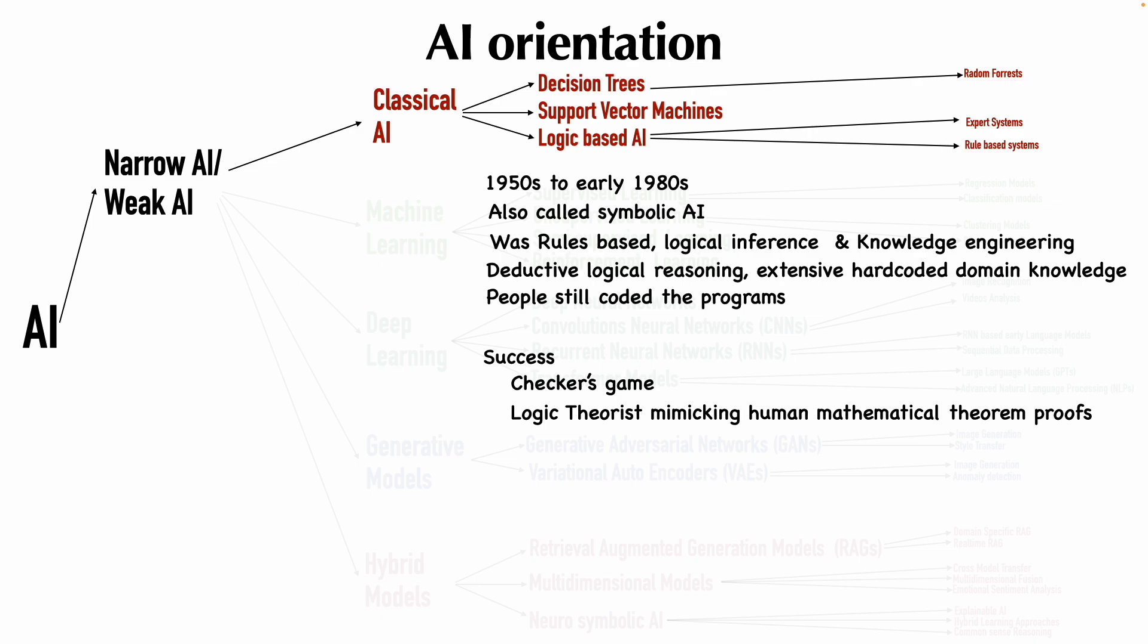But throughout the era of 1950s and 80s, even though there were a lot of successes with these systems, there were limitations. The first limitation was basically the computational power limitation. We didn't have very powerful machines. It was too early.